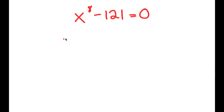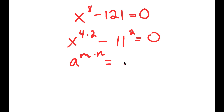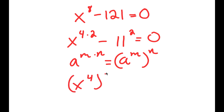In this problem, I have x to the power of 8 minus 1.21 is equal to 0. To solve this, I'm going to first rewrite x to the power of 8 as x to the power of 4 times 2. Now 1.21 is the same thing as 1.1 squared. Using the rule that a to the power of m times n equals a to the power of m to the power of n, x to the power of 4 times 2 equals x to the power of 4, to the power of 2.